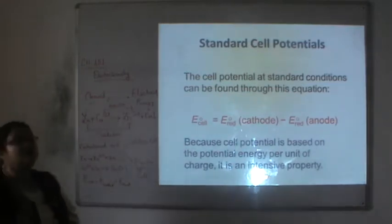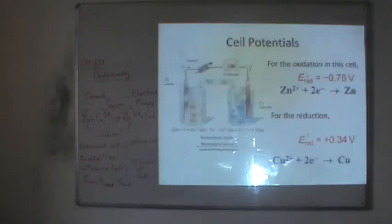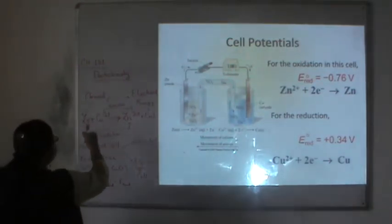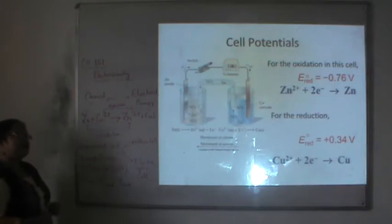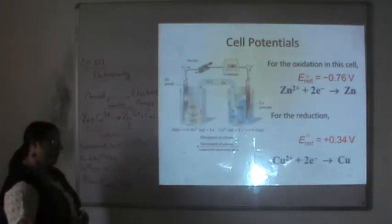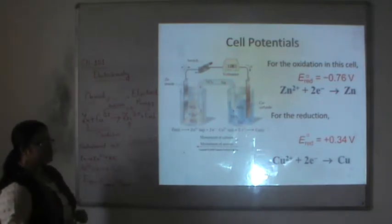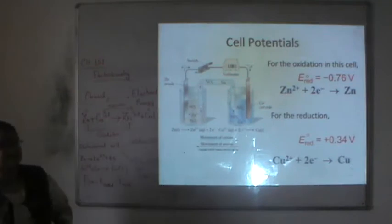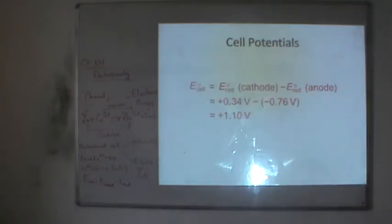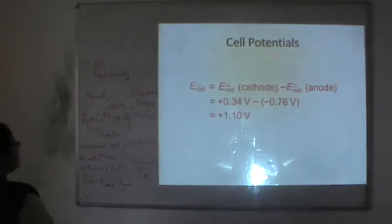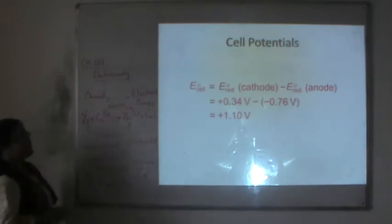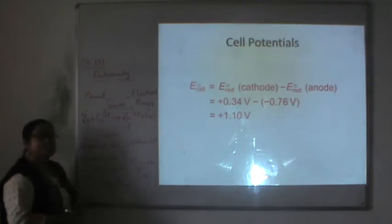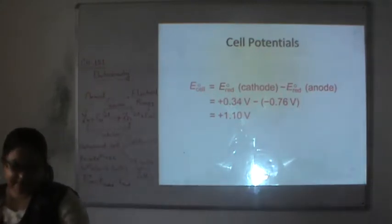The standard cell potential is defined as E°_cell = reduction potential of cathode minus reduction potential of anode. Cell potential is the difference in potential energy per unit charge — it is an intensive property, independent of the mass of the system. For the zinc-copper cell, the reduction potential of copper 2+/copper is plus 0.34 V, and zinc 2+/zinc is minus 0.76 V. So E°_cell = 0.34 − (−0.76) = 1.10 V.